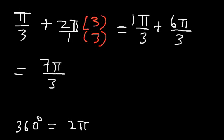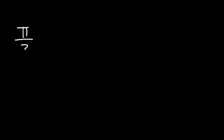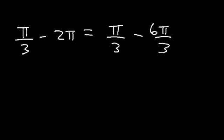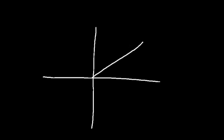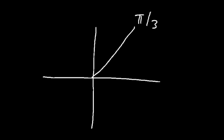So 7 pi over 3 is the positive coterminal angle. To find the negative coterminal angle, subtract 2 pi, which is the same as subtracting 6 pi over 3. So 1 minus 6 is negative 5, giving us negative 5 pi over 3 as the negative coterminal angle. If we graph it, pi over 3 is equivalent to 60 degrees and is in quadrant 1.